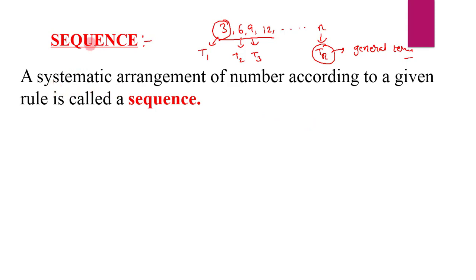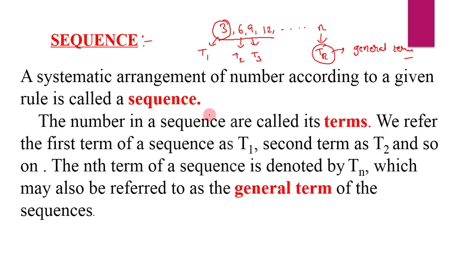To recap: a systematic arrangement of numbers according to the given rule is called a sequence, and the numbers in the sequence are called terms. The first term is referred to as T1, the second term as T2, and so on. The nth term of a sequence is denoted by Tn, and it is also called the general term of the sequence.